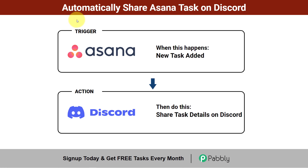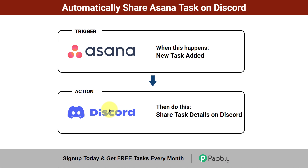In this video I'll show you how to automatically share your Asana tasks on Discord. As soon as a new task is added into Asana, we are going to automatically share the same task along with all task details on Discord as well, without doing anything manually. We just need to build a connection between Asana and Discord with the help of an automation software, and after that every time a new task is created in Asana the same task details will be shared on Discord.